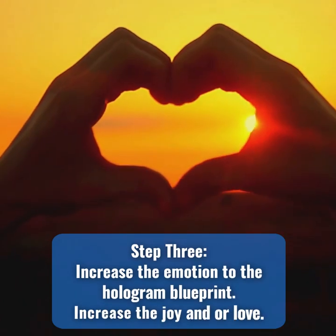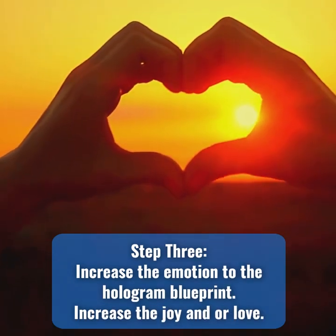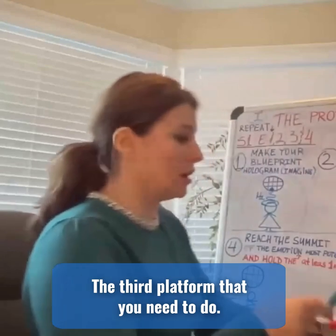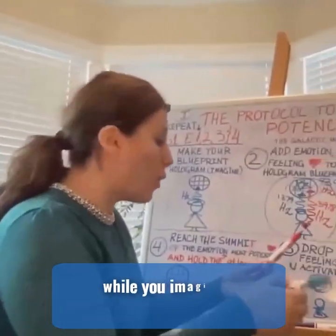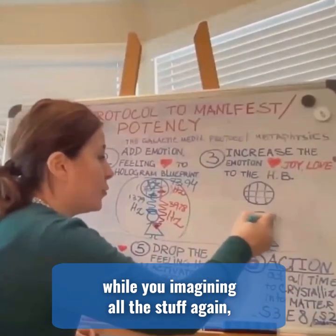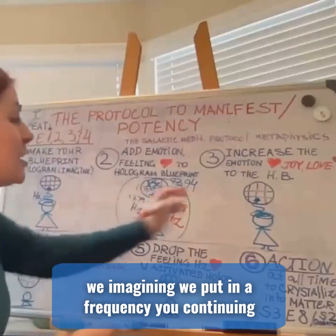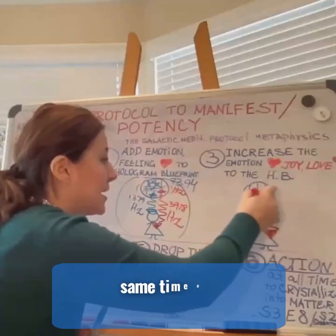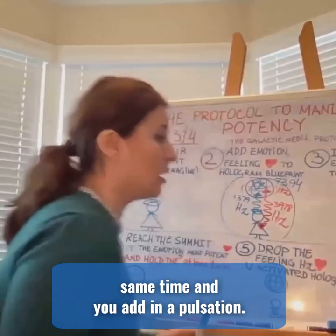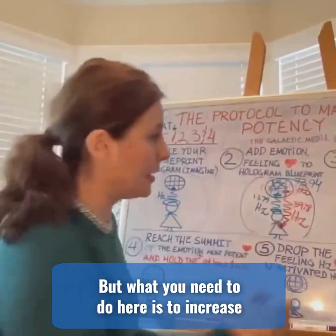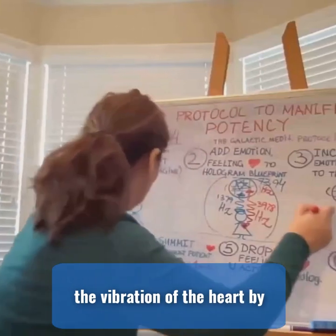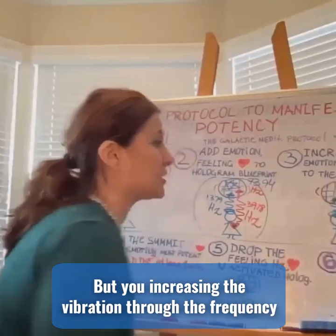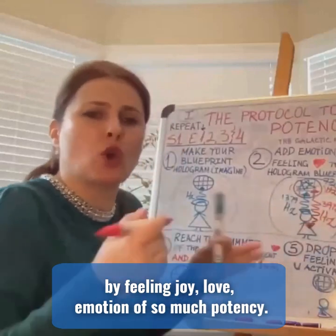Step 3: Increase the emotion to the hologram blueprint — increase the joy and love. While you're imagining all this, you put in a frequency. You're continuing to involve the heart, putting the frequency from the heart at the same time and adding a pulsation. What you need to do here is to increase the vibration of the heart by projecting more and more. You're increasing the vibration through the frequency by feeling joy, love, and emotion of so much potency.